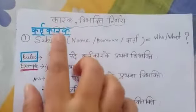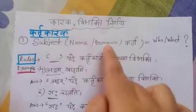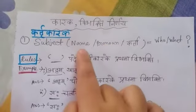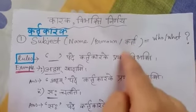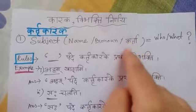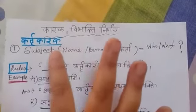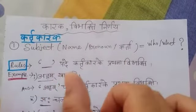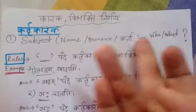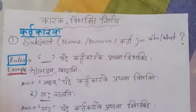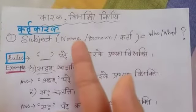Karti karak is the subject. Subject means the name — sometimes it is a pronoun, because we use pronouns instead of nouns. So name and pronoun both can be the subject. Those who are doing the work — that is karti karak. When we ask 'who' or 'what' and the answer comes, that answer is the karti karak.